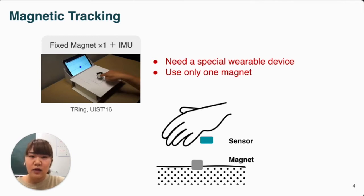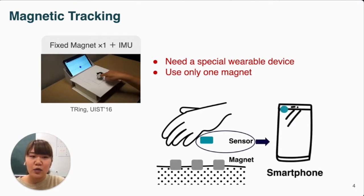Our idea is to expand the sensing range by arranging magnets in a planar pattern and to use the sensor of the smartphone for the tracking.